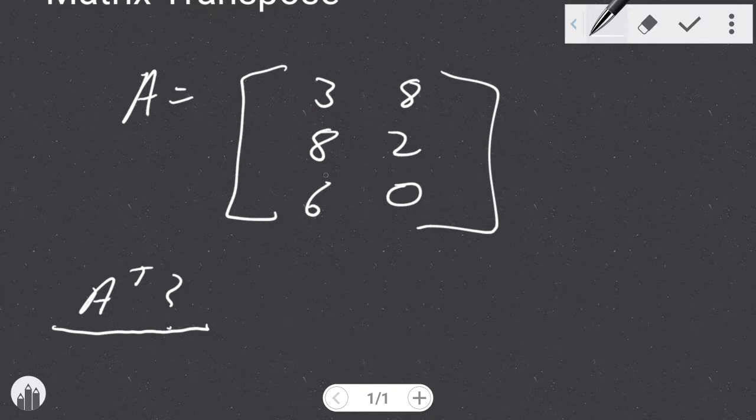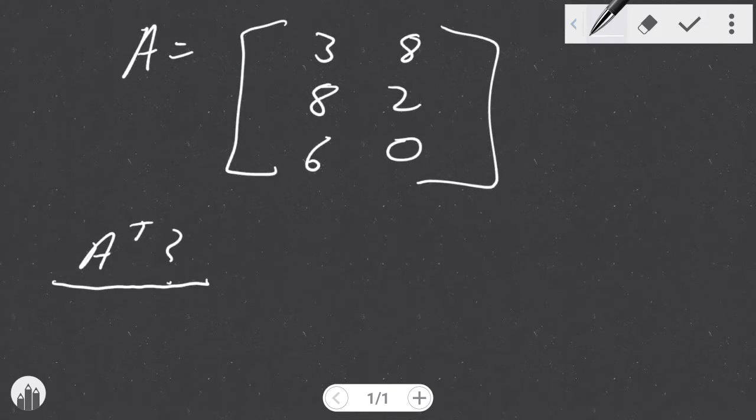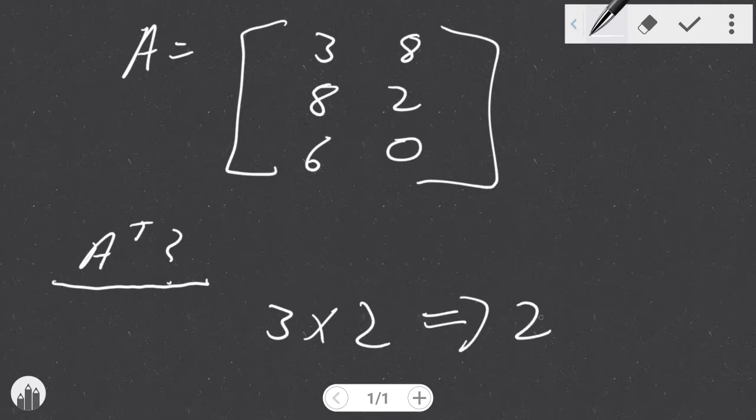So these rows would turn into these columns, and these columns would become these rows. If you see a three by two matrix, which is three columns, sorry, three rows, two columns, this would convert into two rows and three columns.